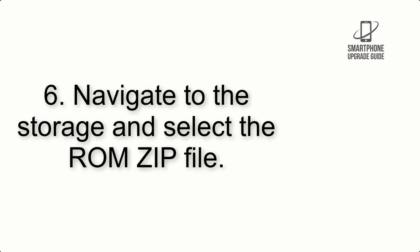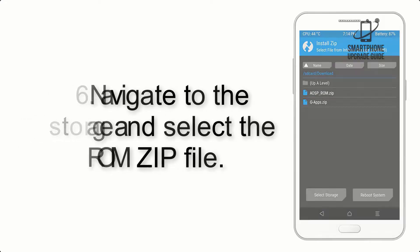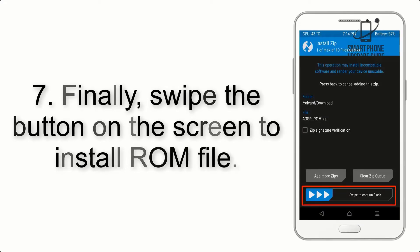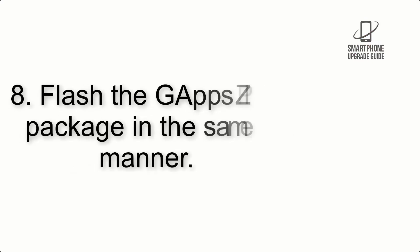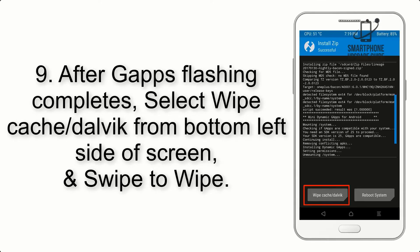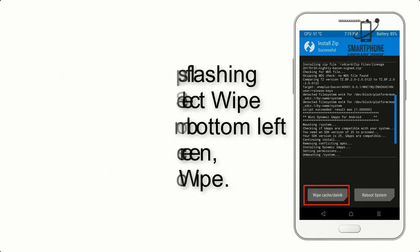Step 6: Navigate to the storage and select the ROM zip file. Step 7: Swipe the button on the screen to install the ROM file. Step 8: Flash the GApps zip package in the same manner. Step 9: After GApps flashing completes, select Wipe Cache and Dalvik from the bottom left side of the screen and swipe to wipe.